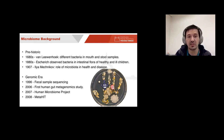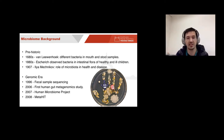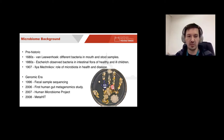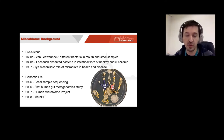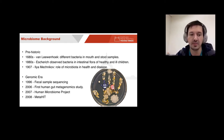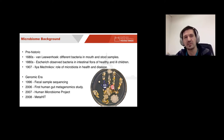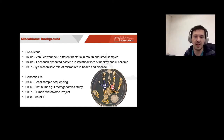Then came the genomic era: the first fecal sample was sequenced in 1996. In 2006 we started the first big metagenomics studies; in 2007 the Human Microbiome Project launched, aiming to identify microorganisms and produce reference genomes for future studies. Europe had a parallel effort called MetaHIT — Metagenomics of the Human Intestinal Tract — focusing specifically on the human gut microbiome.